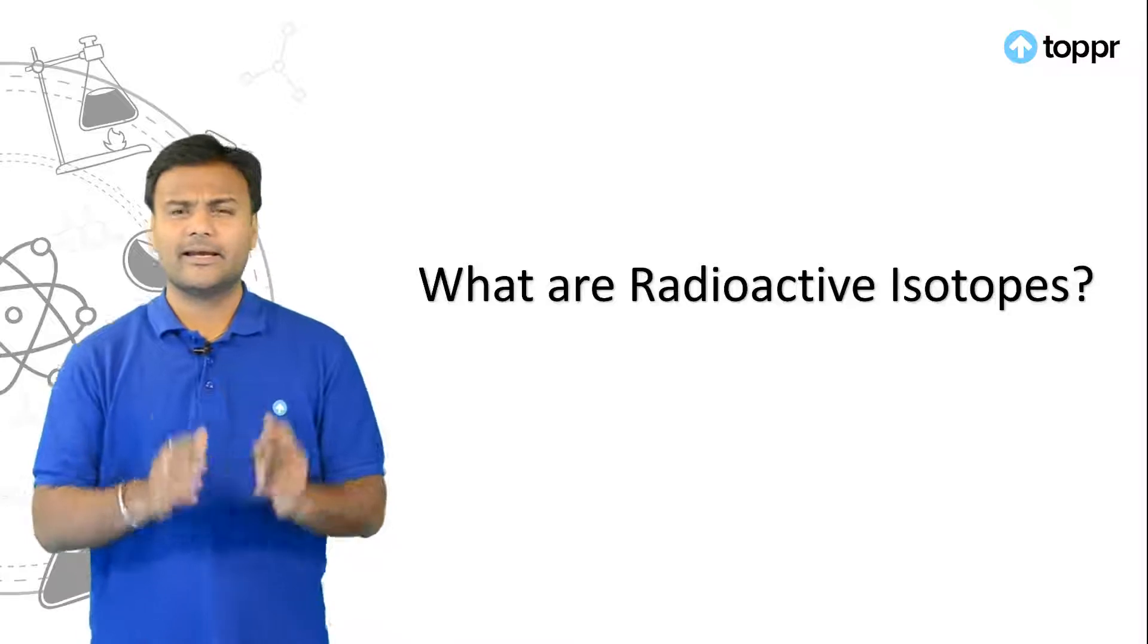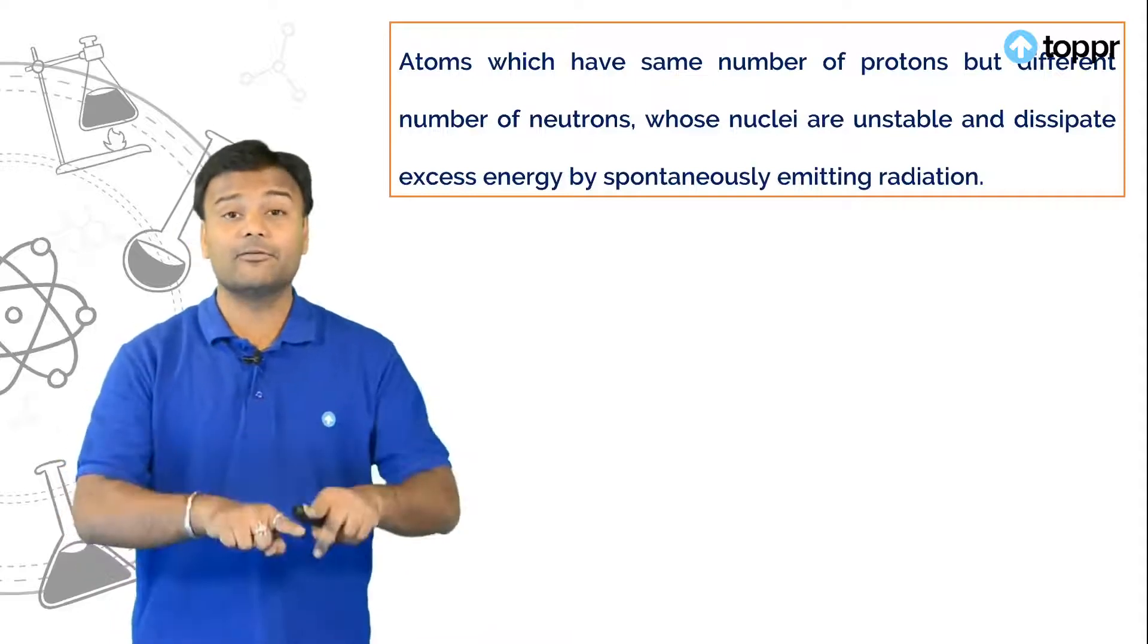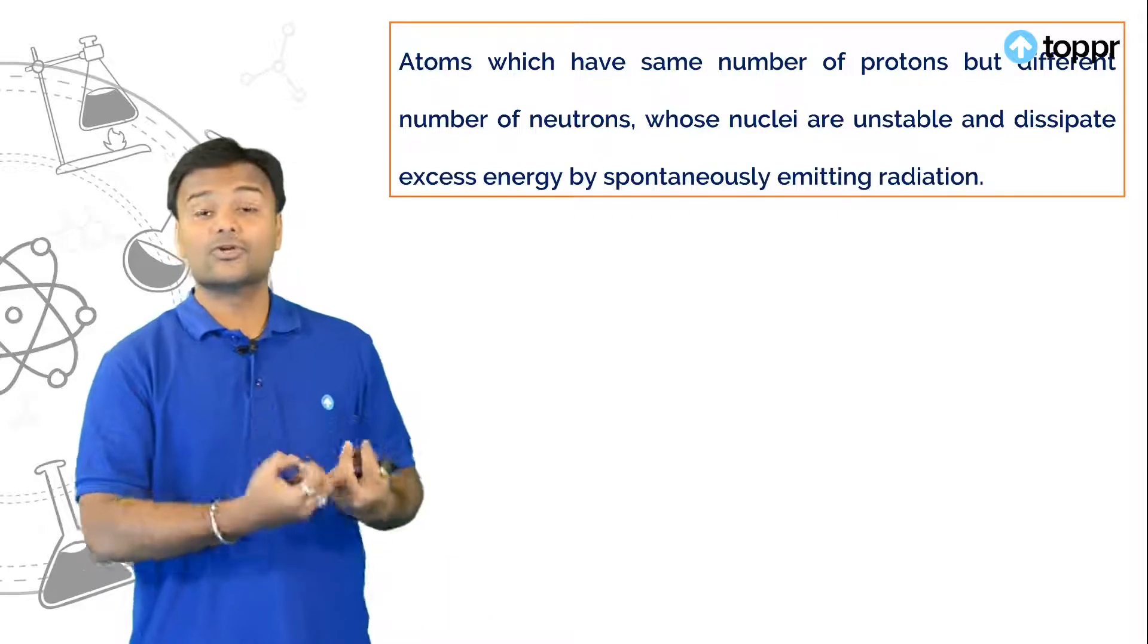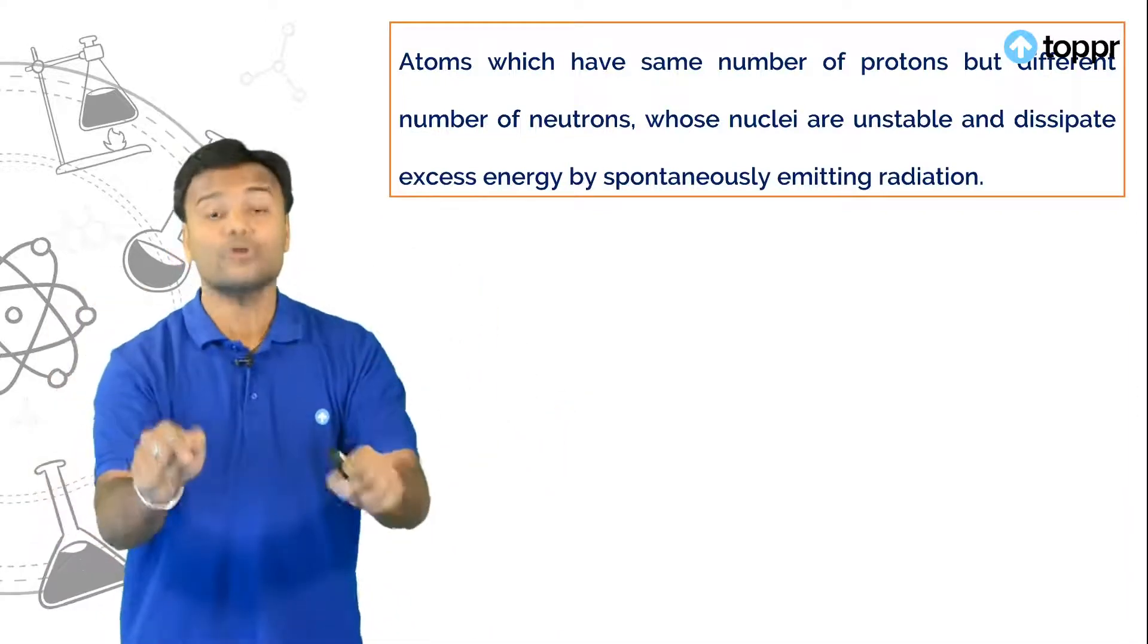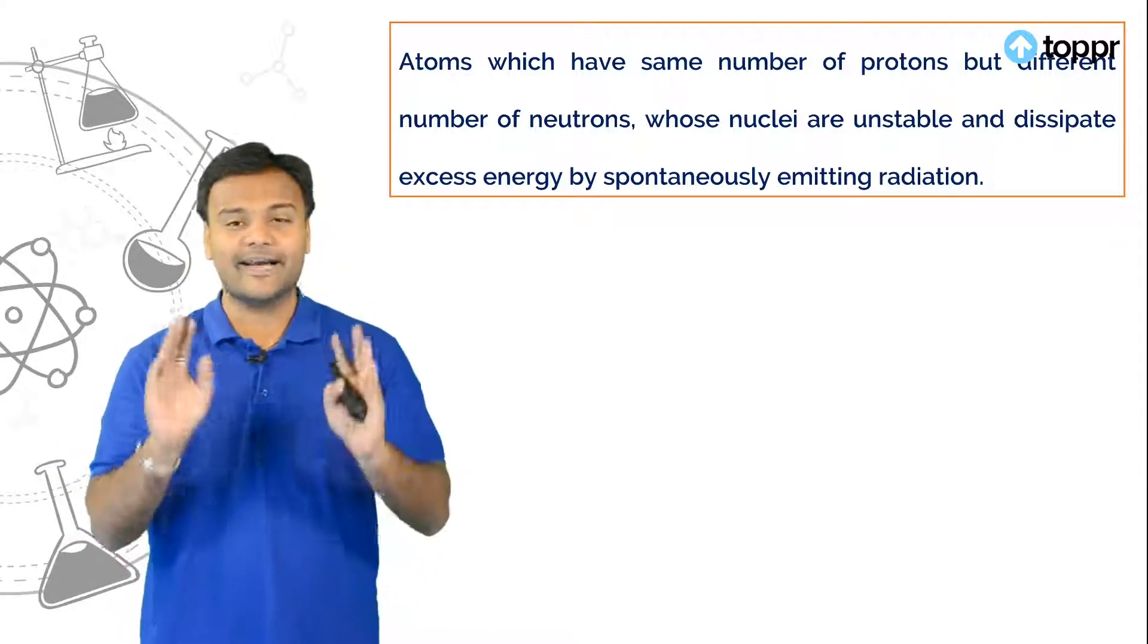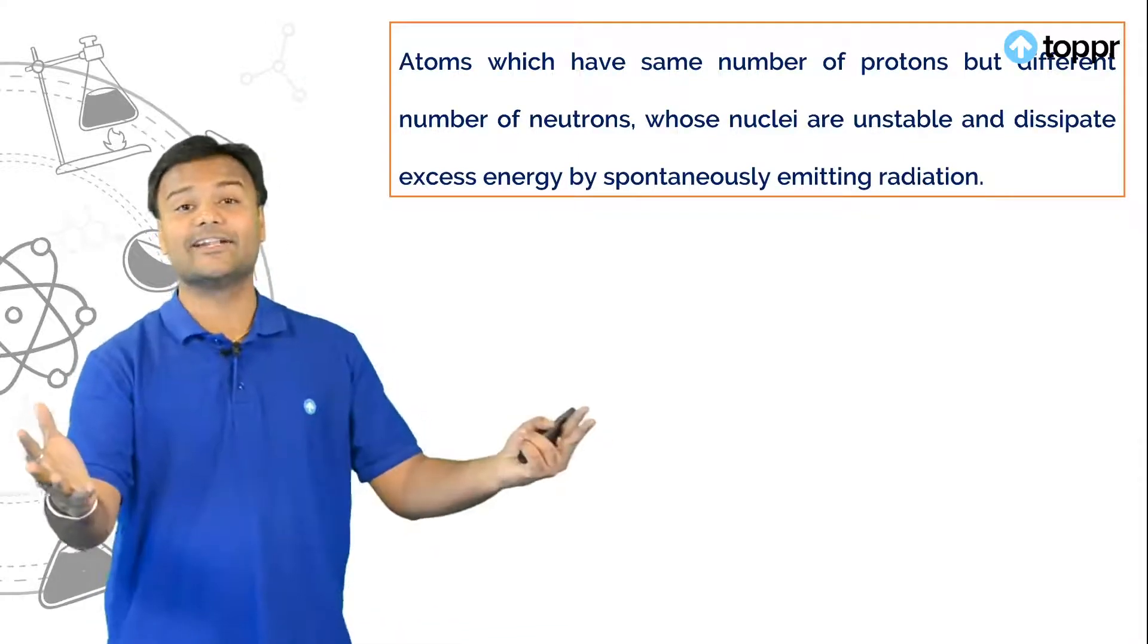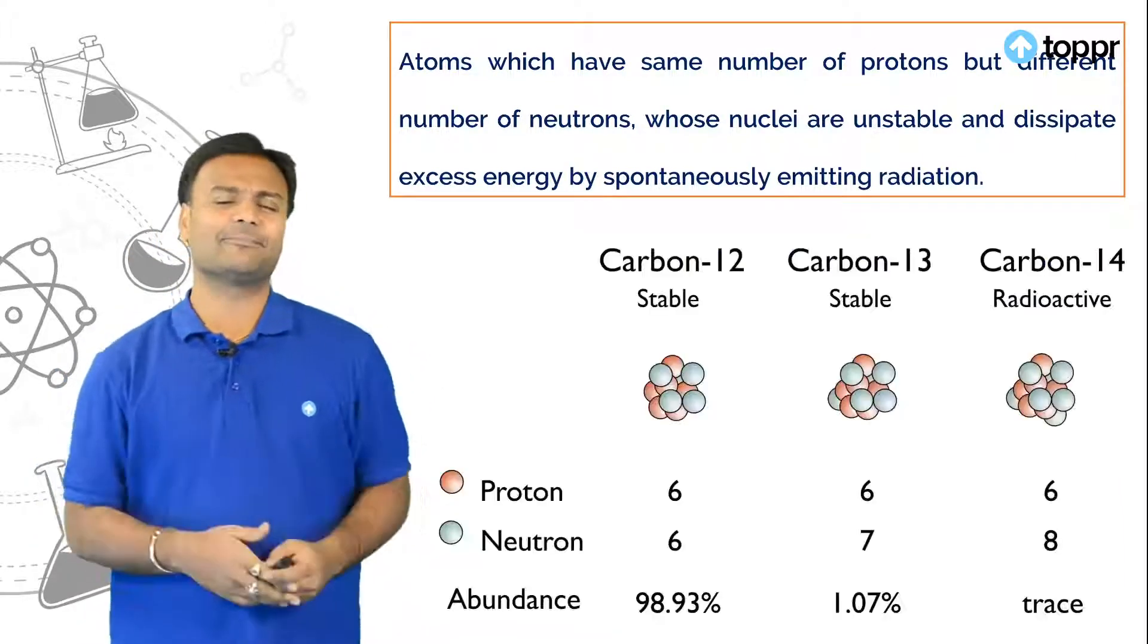So radioactive isotopes. Here these isotopes are nothing but they have similar number of protons but difference in their number of neutrons. So due to this difference some of the nuclei they become unstable. Why? Because they have lot of energy in it. So these isotopes they dissipate this excess energy in the form of radiation. And those isotopes are called as radioactive isotopes. Right? So to simplify radioactive isotopes are nothing but they have nuclei which are unstable because of excess of energy present in it. And this excess of energy is released in the form of radiation. That is the reason why they are called as radioactive isotopes. Say for example look at this.